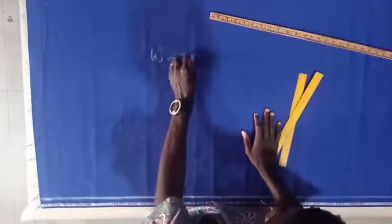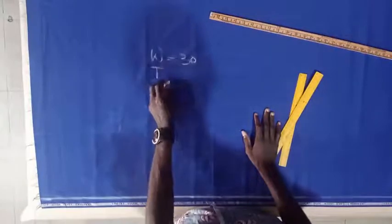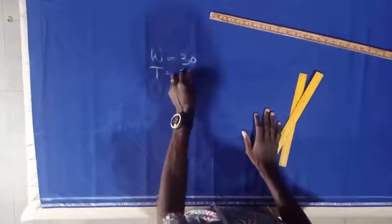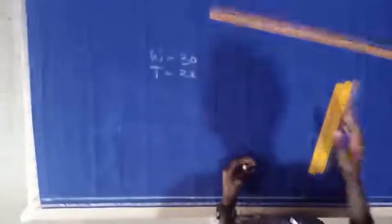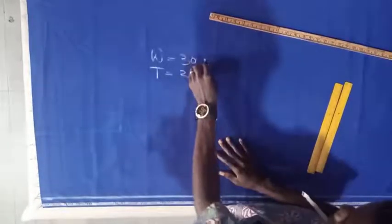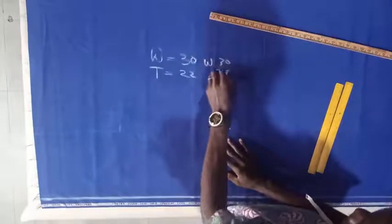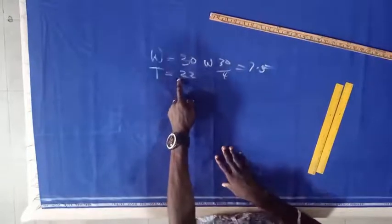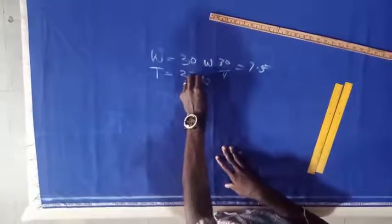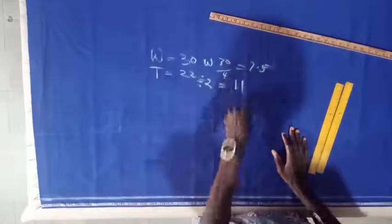Let's use the first set of measurements. We use a waist of 30 and a tie — or trouser width or lap — of 22. When cutting a trouser, you divide the waist measurement by four, so 30 divided by 4 equals 7.5. For the tie measurement or lap, you divide it by 2, so 22 divided by 2 equals 11.